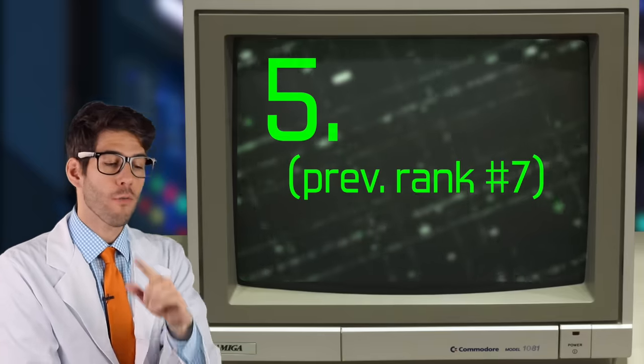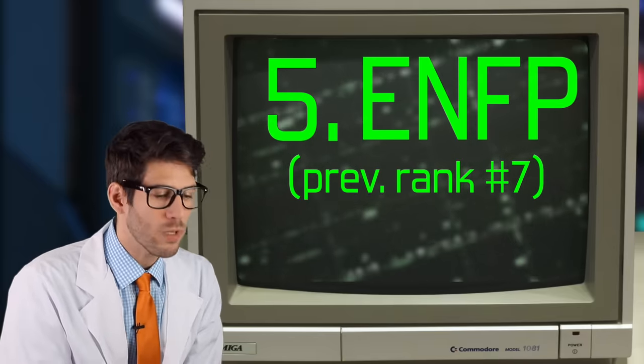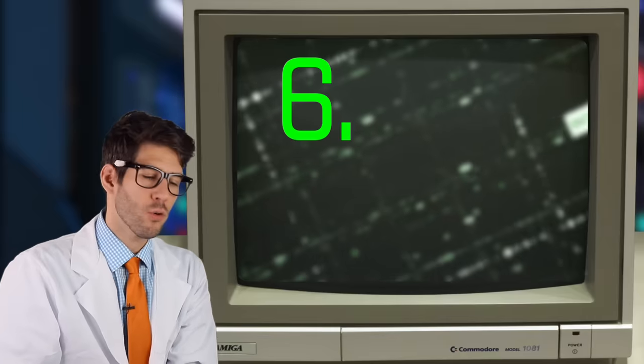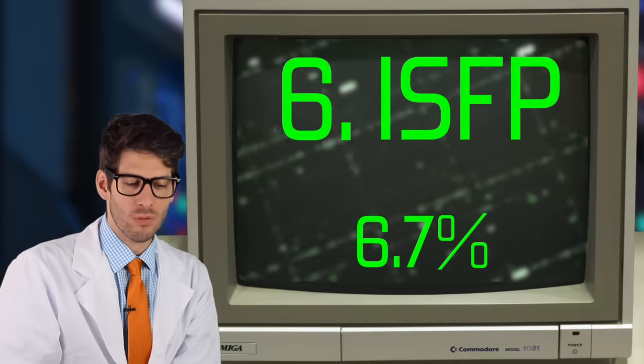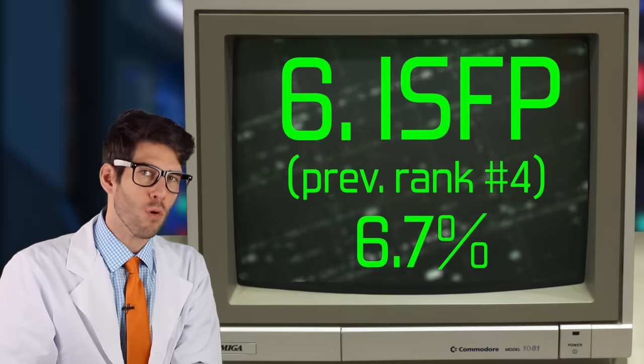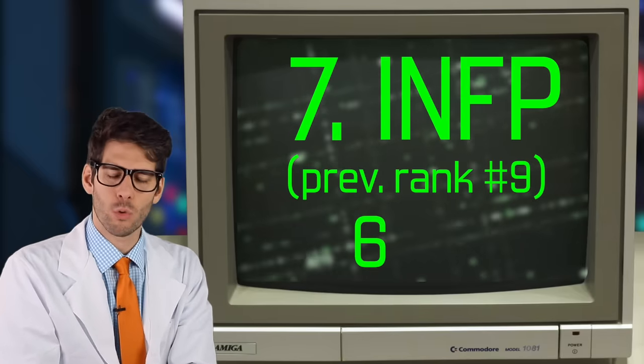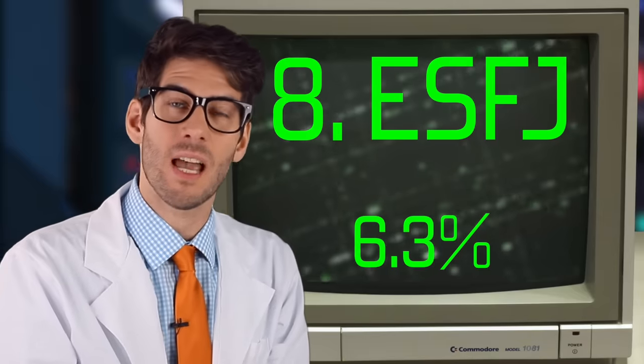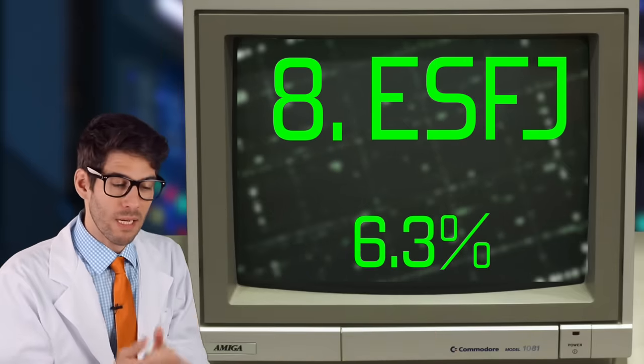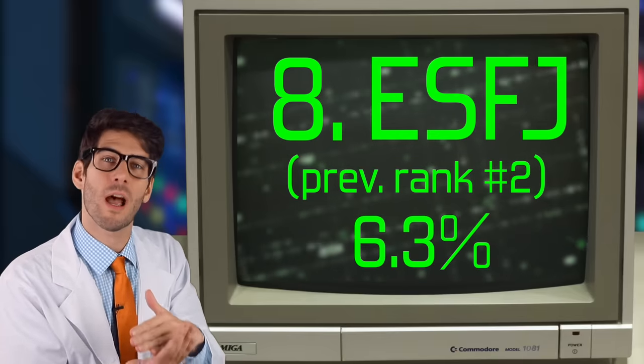Coming in at the number five spot, moving up from number seven, our first intuitive type, the ENFP, with 7.5% of the population. So once again, the ENFP is the most common intuitive type. Our number six type is the ISFP with 6.7% of the population, falling from the number four rank. And then the number seven most common type, the ISFP's very close cousin, the INFP, with 6.4% of the population. The INFP moved up the list from the ninth most common to the seventh most common. Our number eight on the list is the ESFJ with 6.3% of the population. And this type took the biggest tumble down the list. Previously, it was at the number two spot, the second most common type, and now it's fallen to eighth. Quite surprising.